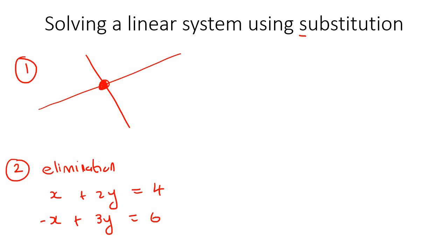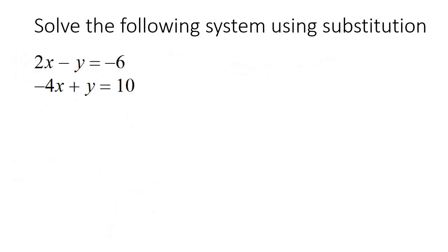Now we are going to do a third method called substitution. All three methods help us achieve the same goal: finding where the two equations intersect. With substitution, it's pretty straightforward. Step one is to get either an X or a Y alone.